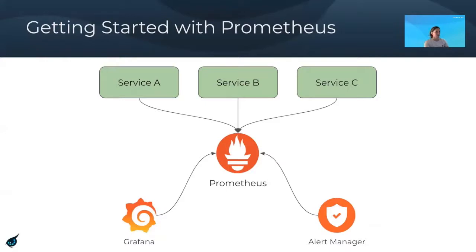Getting started with Prometheus is very easy. In this diagram, we have services exposing metrics via their Prometheus endpoints. A Prometheus instance is set up to discover these endpoints and scrape the metrics. From there, you can run an instance of Grafana and point it to the Prometheus instance to visualize your metrics. You can also do the same for alerting with Alert Manager, pointing it to your Prometheus instance.